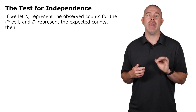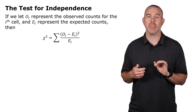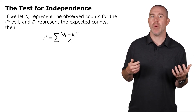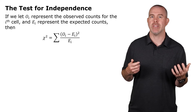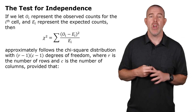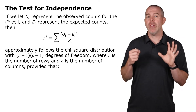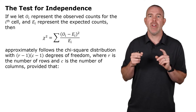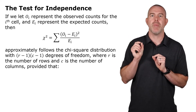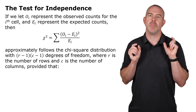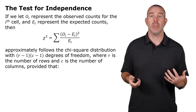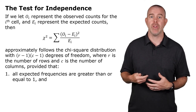If we let O sub i represent the actual observed counts and E sub i be the expected counts, then we get a new statistic called the chi-squared test statistic, and it follows the chi-squared distribution. The degrees of freedom is the number of rows minus one times the number of columns minus one, multiplied together.